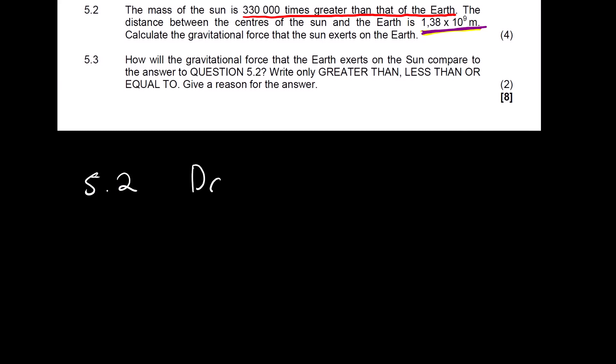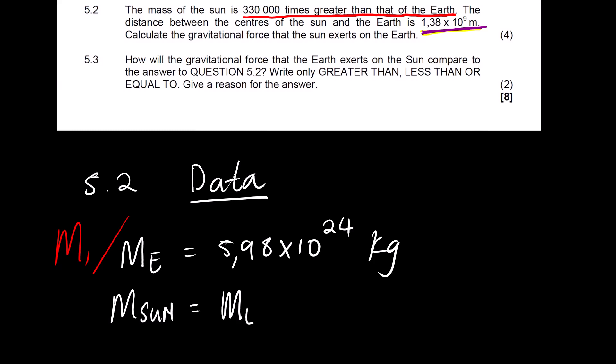5.2. Now let us look at the data which we are given. So the mass of the Earth, we know that it's 5.98 times 10 to the power 24 kg. We can say this is M1. And then the mass of the Sun. They are saying it's 380,000 times greater. So it will be the mass of the Earth multiplied by 380,000. It will be in kg. We can also say this is M2.